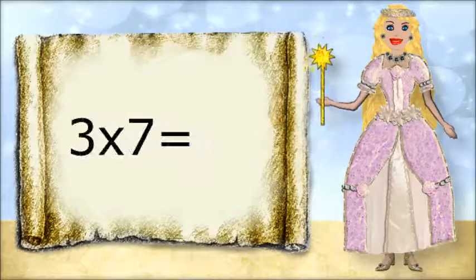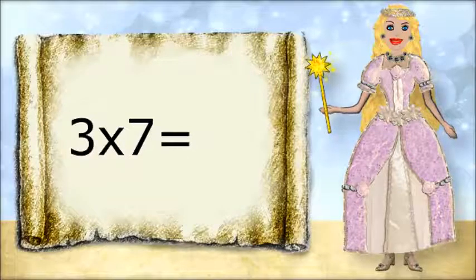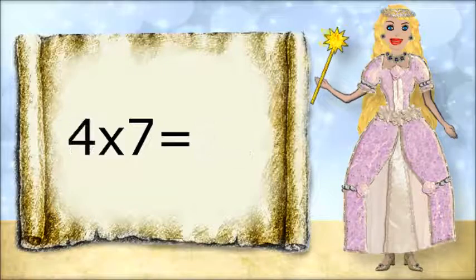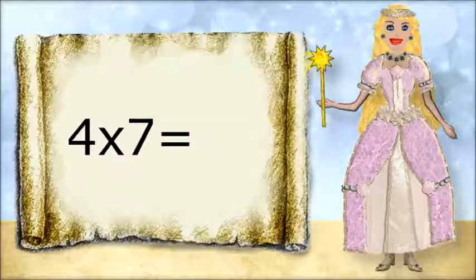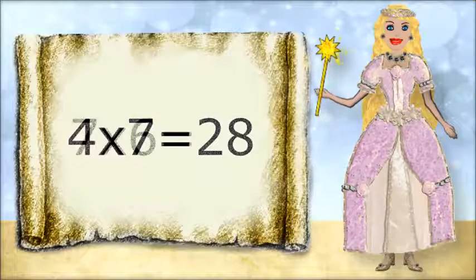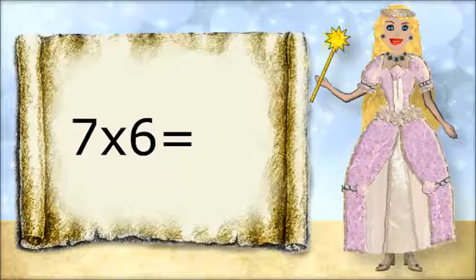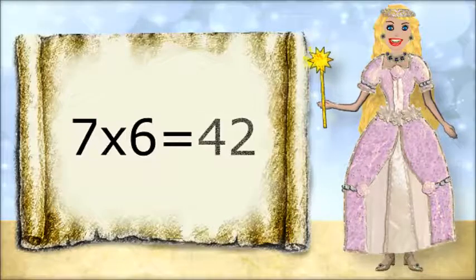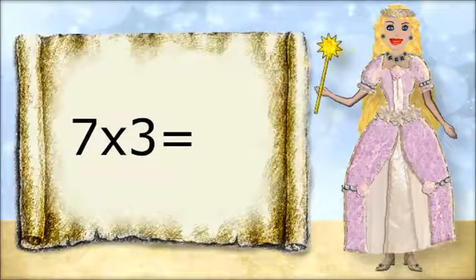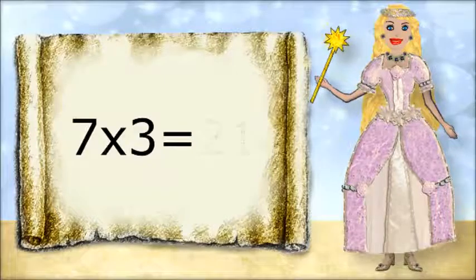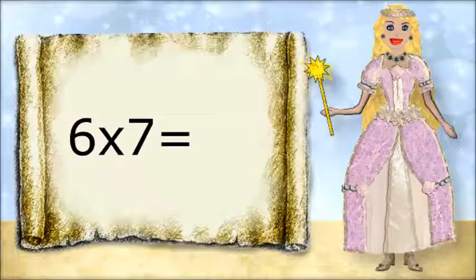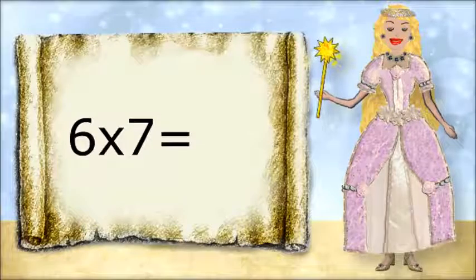3 times 7 equals 21. 4 times 7 equals 28. 7 times 6 equals 42. 7 times 3 equals 21. 6 times 7 equals 42.